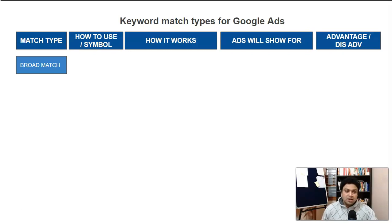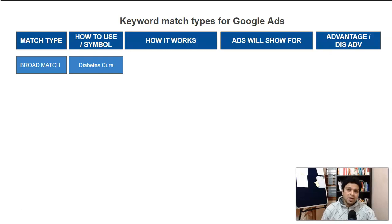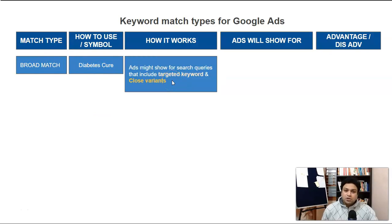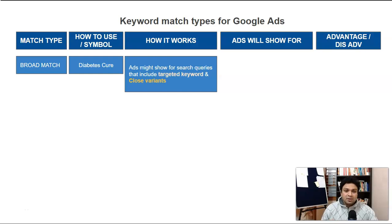Number one is broad match keywords. We're going to use these two keywords — 'diabetes' and 'cure' — assuming we want to show our ad for those terms. While using broad match, we don't use any symbols. Ads may show for search queries that include the targeted keywords and close variants. When you use 'diabetes' and 'cure,' it will show ads for those keywords plus close variants.